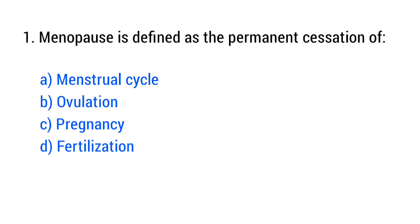Question number 1. Menopause is defined as the permanent cessation of the right answer is option A, menstrual cycle.